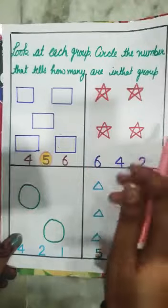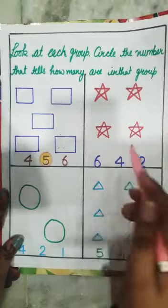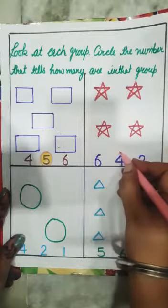Next is stars. How many stars? One, two, three, four. How many stars? Four. Circle the number four.